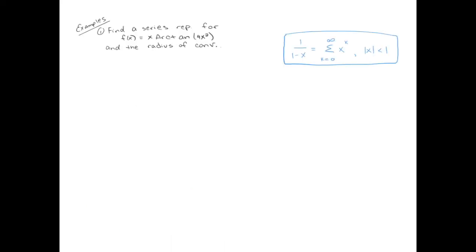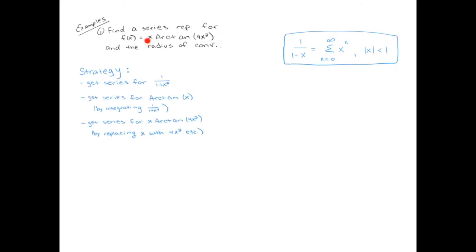Let's look at an example. We're going to find a series representation for x times arctan of 4x squared. Remember, this all relates back to the geometric series box, which is 1 over 1 minus x. The strategy: we know the derivative of arctan is 1 over 1 plus x squared, so we start with the geometric series for 1 over 1 plus x^2, take its antiderivative to get arctan, then plug in 4x^2 everywhere we see an x, and afterward multiply the whole thing by x.